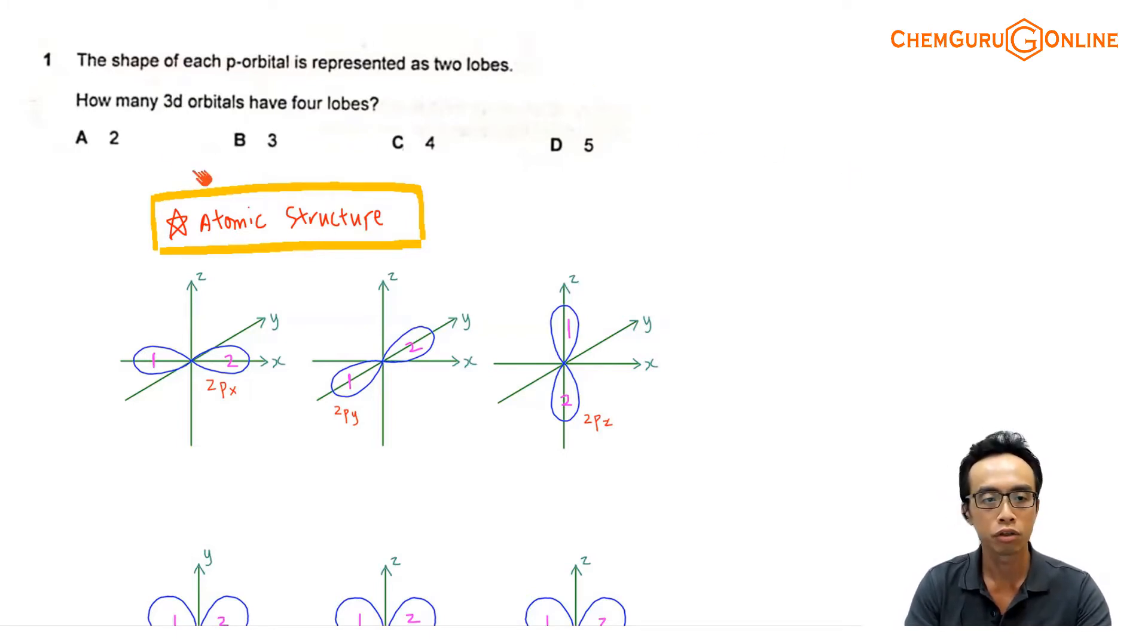Now question 1, we have the shape of each p orbital is represented as 2 loops. So how many 3d orbitals have 4 loops? So we have 4 options A, B, C, D. Of course, this question is testing us on the topic on atomic structure.